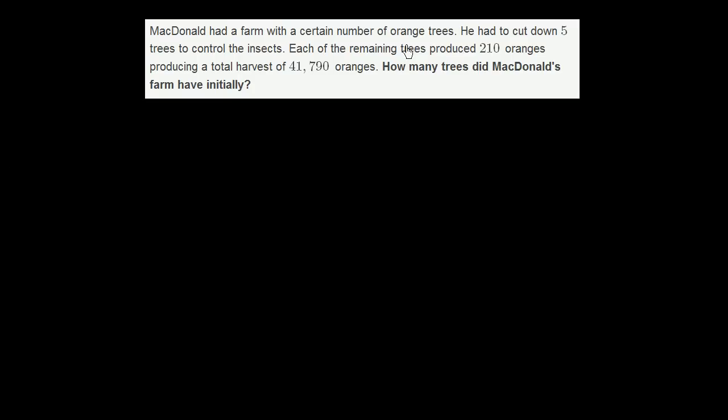McDonald had a farm with a certain number of orange trees. He had to cut down five trees to control the insects. Each of the remaining trees produced 210 oranges, producing a total harvest of 41,790 oranges. How many trees did McDonald's farm have initially?